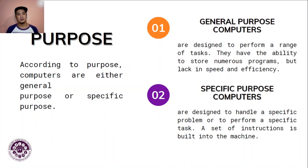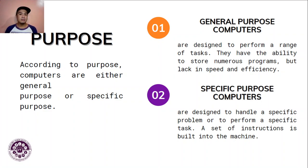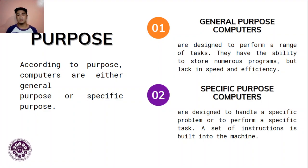According to purpose, computers are either general purpose or specific purpose. General purpose computers are designed to perform a range of tasks — they have the ability to store numerous programs but lack in speed and efficiency because they run multiple programs simultaneously. Specific purpose computers, on the other hand, are designed to handle a specific problem or perform a specific task.